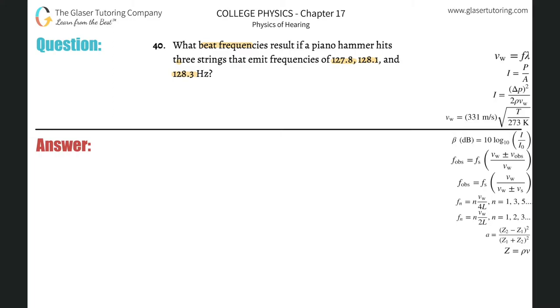All right, so you've got to think of all the pairs. Let's call this one, two, and three. We can have a pair between one and two, we can have a pair between one and three, we can have a pair between two and three.